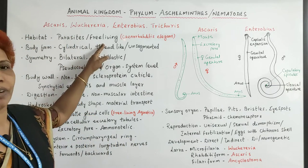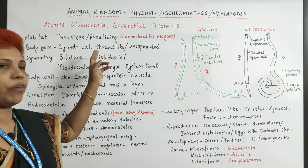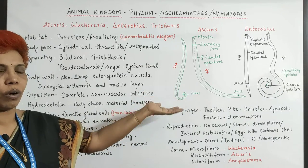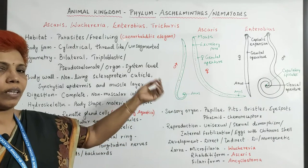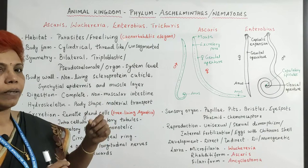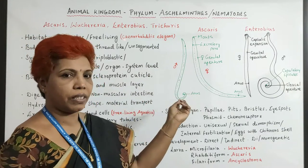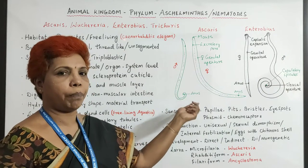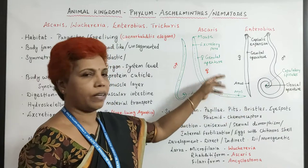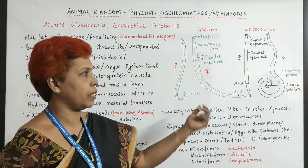They are parasites or free living — for example, Caenorhabditis elegans. Their body form is cylindrical and thread-like, so they are called threadworms. Whether you take pinworm, hookworm, or any category, they are all like a thread. Generally the male will have a curved tip at the anus end, and the female will have a pointed end — that is the basic difference between male and female.